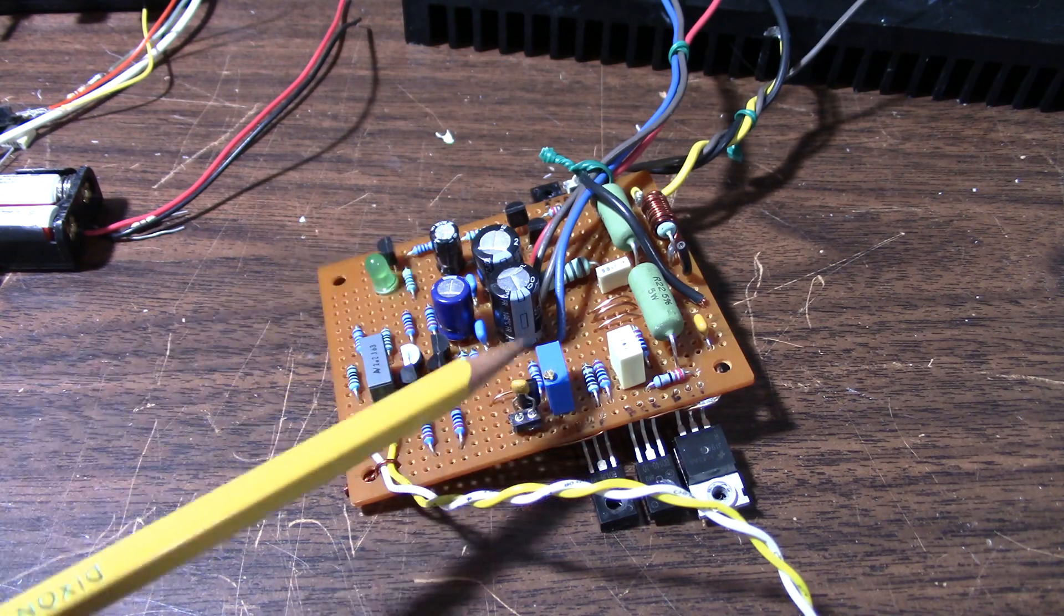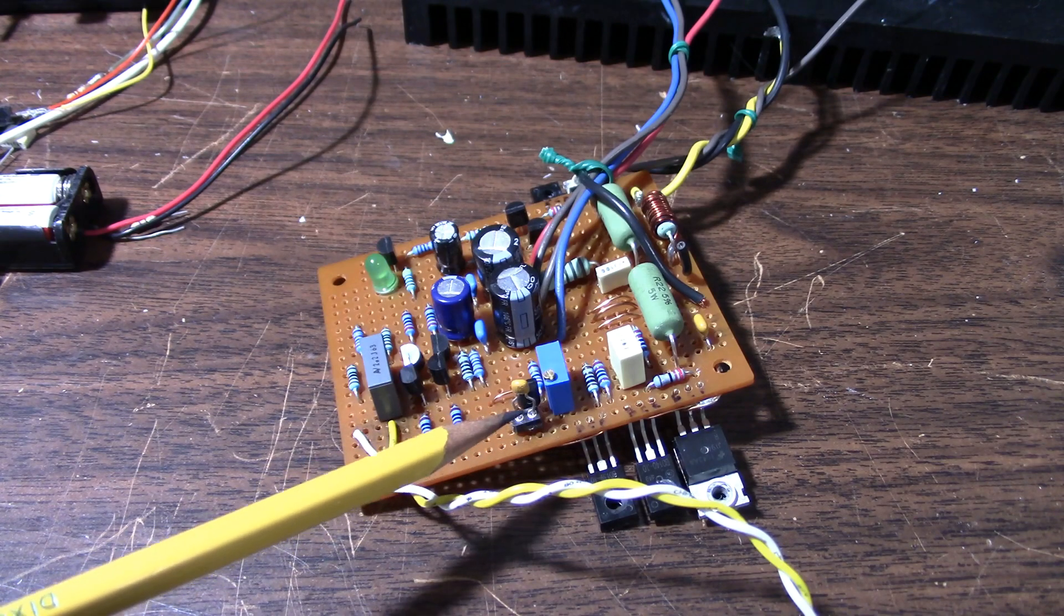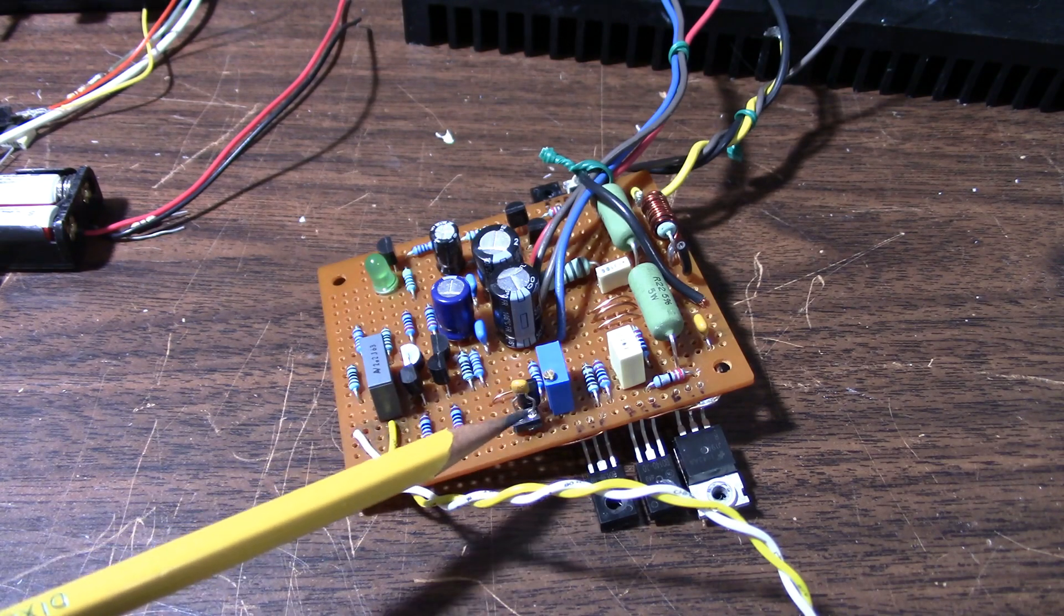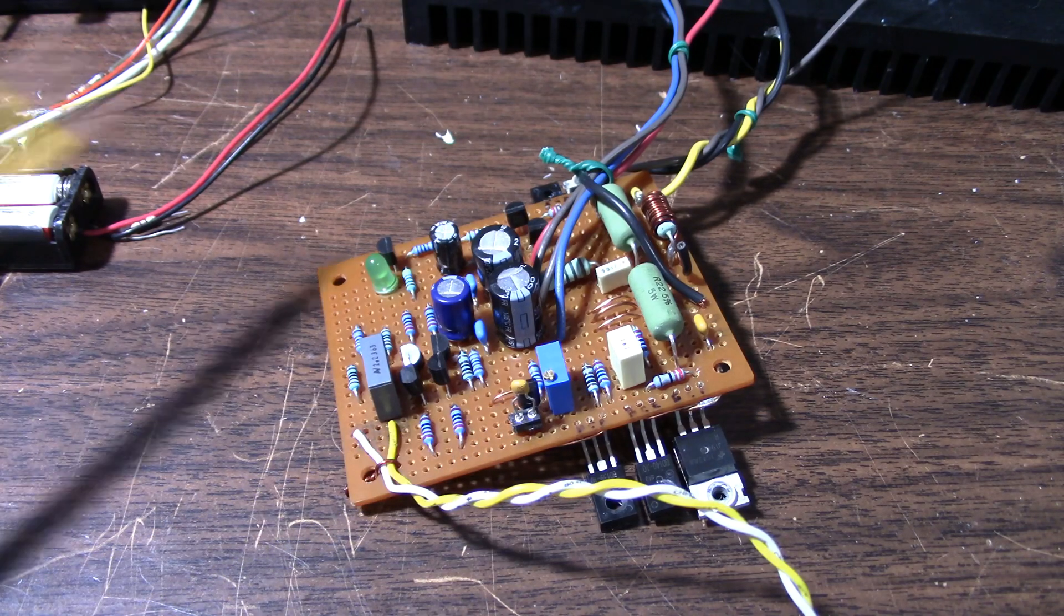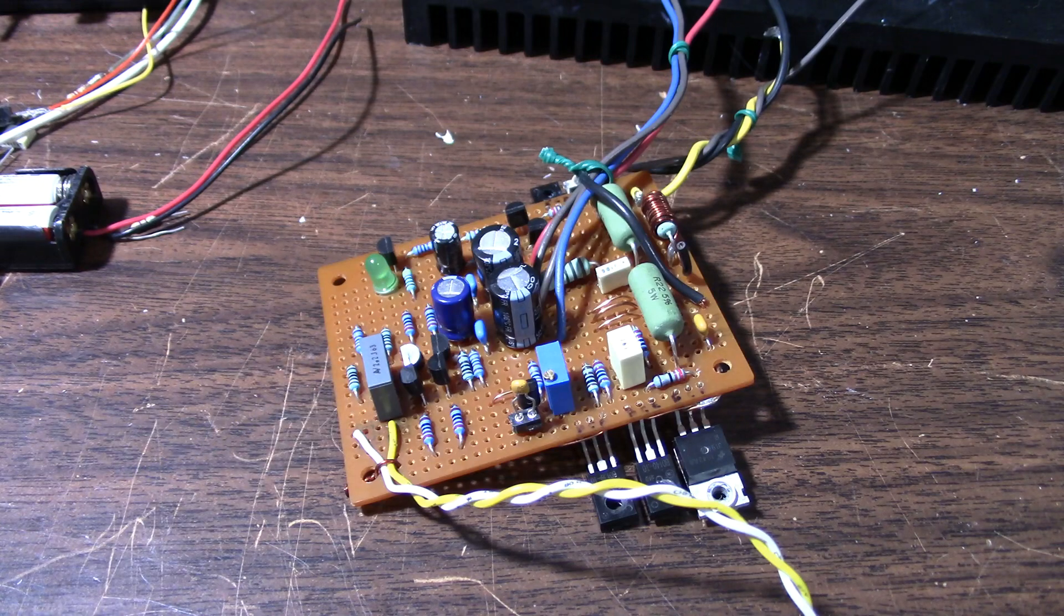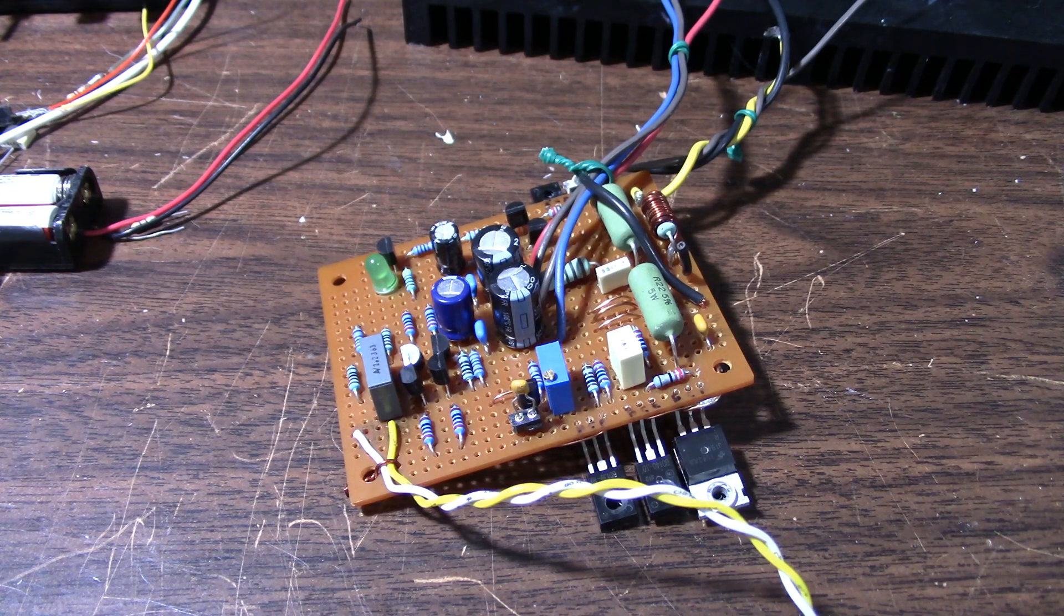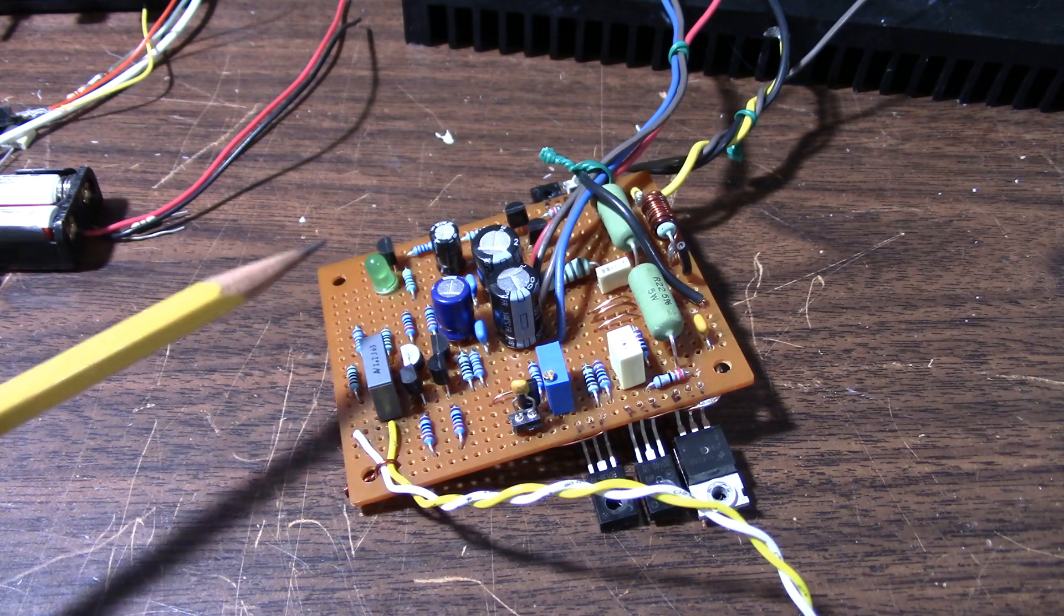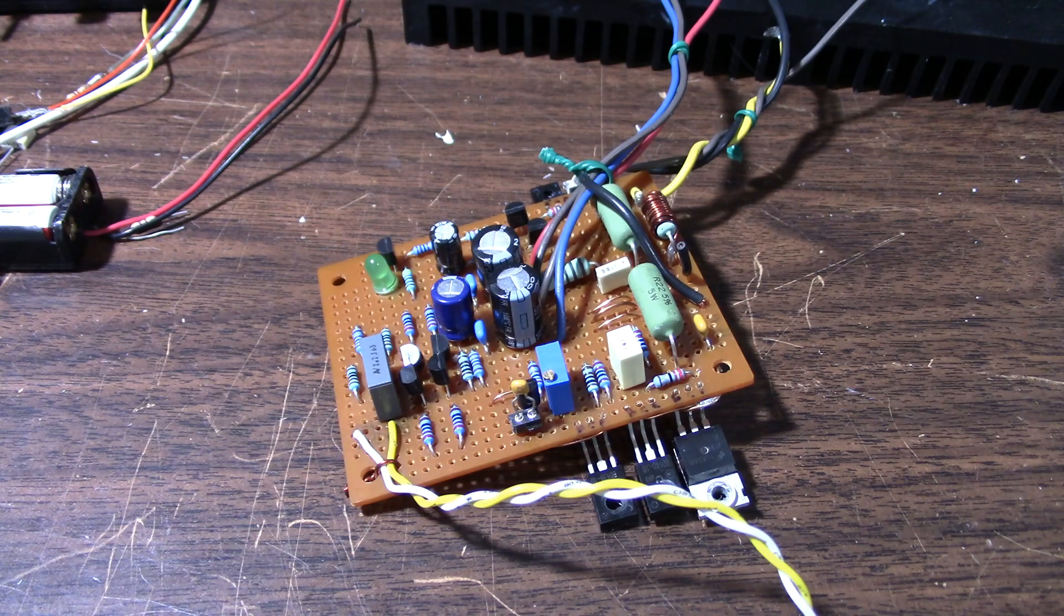So one thing I did do is put a socket here so I can unplug the Miller compensation cap and switch it with different values. That will certainly make that a lot easier. And somebody mentioned that I should remove the input RF filter capacitor, the 220 picofarad cap, that's on the input that acts as a low-pass filter.